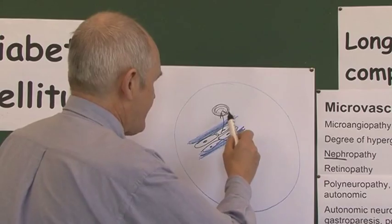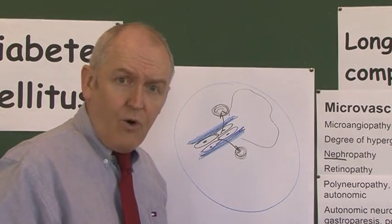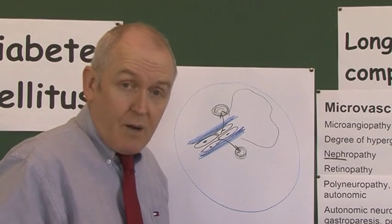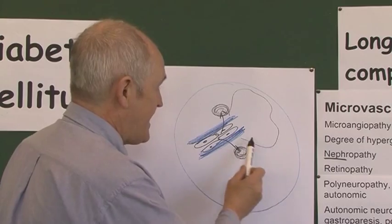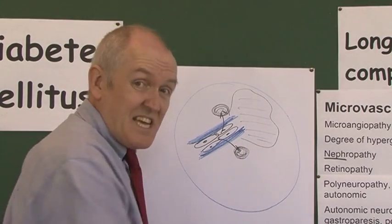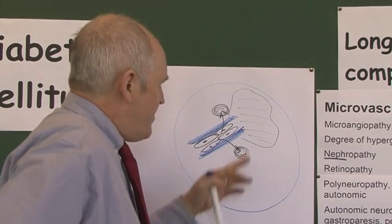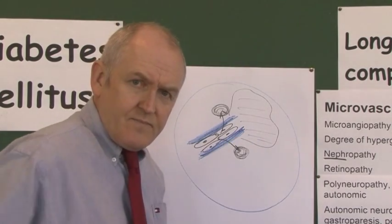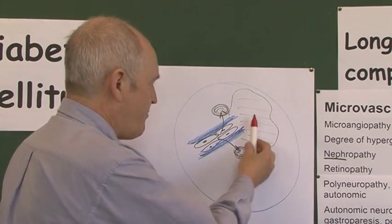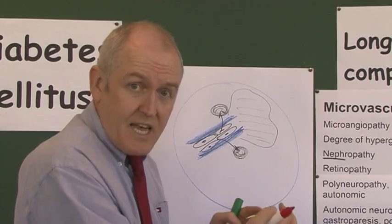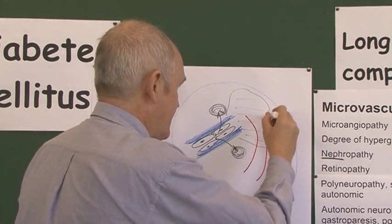This means that an area of the retina is going to be ischemic and therefore hypoxic — so that's bad for the retina as well. So we've got areas of exudate, and now we've got an area of hypoxic ischemia. But the hypoxia stimulates the development of new blood vessels; because it's in a hypoxic area, that stimulates new blood vessels to grow into the retina.